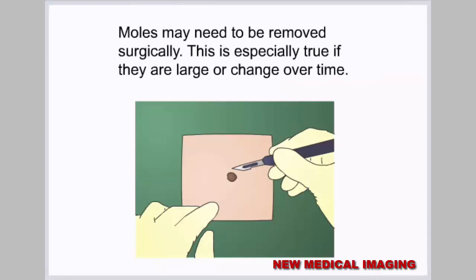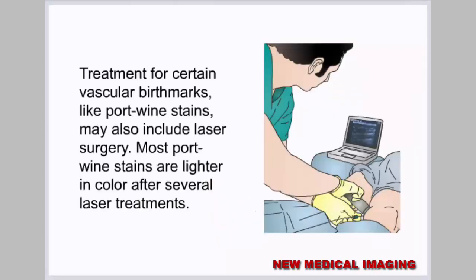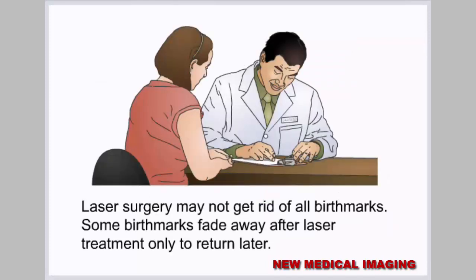Moles may need to be removed surgically, especially if they are large or change over time. Lasers are another way to treat certain birthmarks such as cafe au lait spots — a laser is a device that forms light into intense narrow beams that may be used to cut or destroy tissue. Treatment for vascular birthmarks like port wine stains may also include laser surgery; most port wine stains are lighter after several laser treatments. However, laser surgery may not get rid of all birthmarks, and some may fade only to return later.